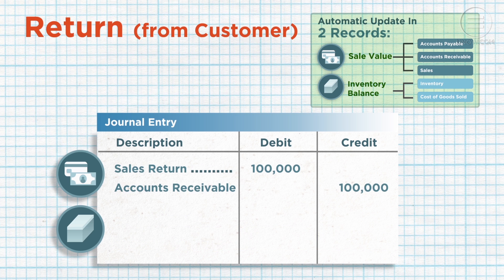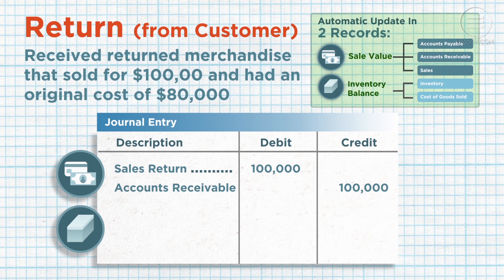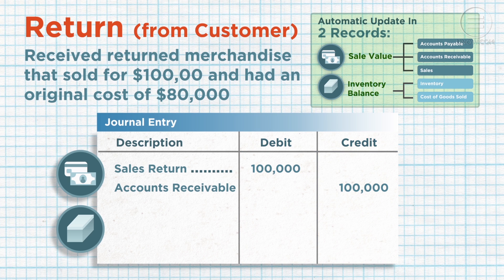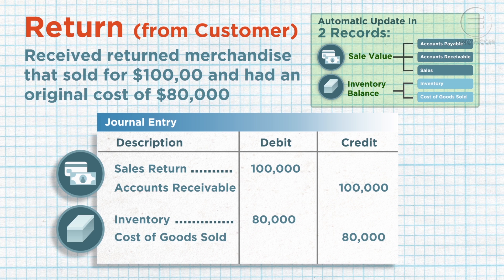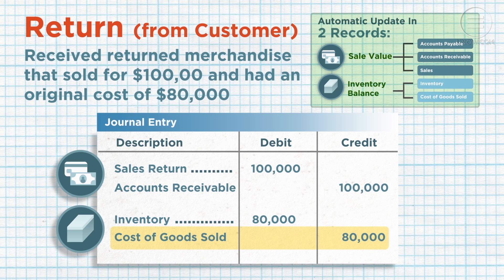Inventory returns from the customer also affects two accounts: sales returns and accounts receivable. You'll debit sales returns and credit accounts receivable. But because you're using the perpetual inventory system, you'll also see an entry for the cost of goods sold — inventory is debited and cost of goods sold is credited.